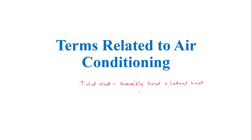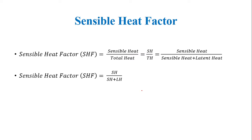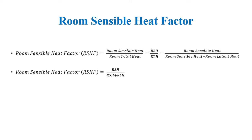We will see these terms one by one. The first is the Sensible Heat Factor, also known as SHF. This is the ratio of sensible heat to the total heat — sensible heat divided by total heat — where total heat is sensible heat plus latent heat. Mathematically: SHF = SH / (SH + LH), where SH is sensible heat and LH is latent heat.